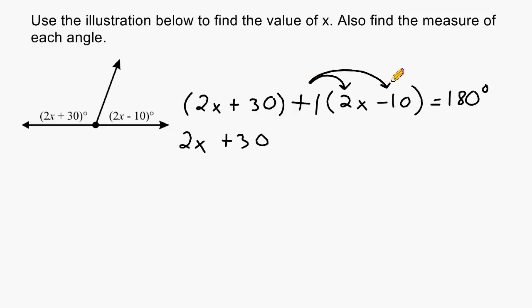If there was a minus sign, we would have to multiply negative 1 by each term inside parentheses. So 1 times 2x is 2x and 1 times negative 10 is negative 10. And this whole expression is still equal to 180 degrees.